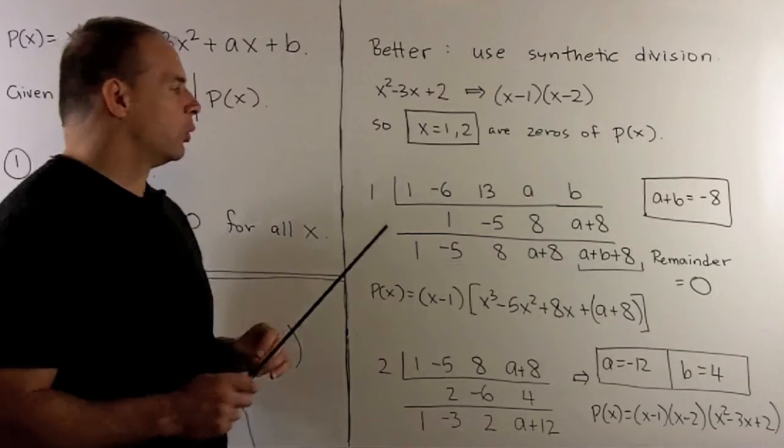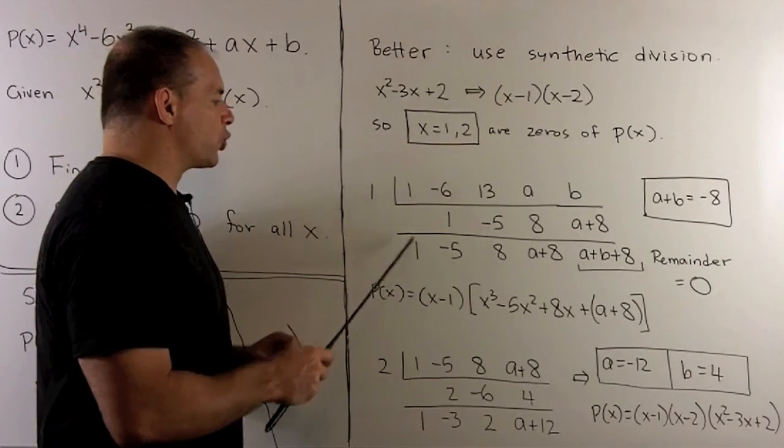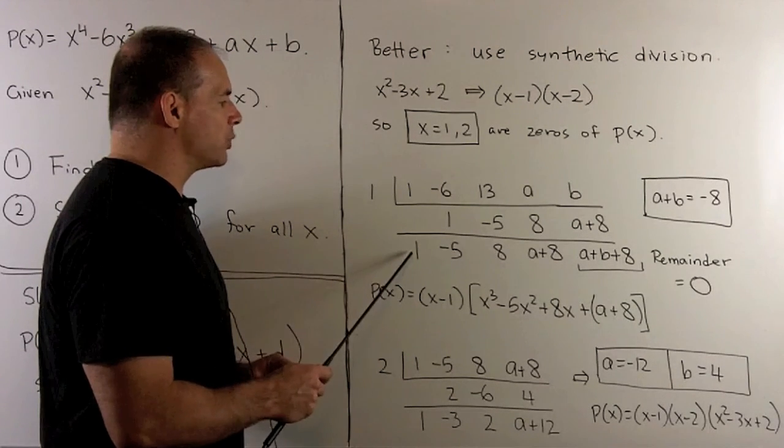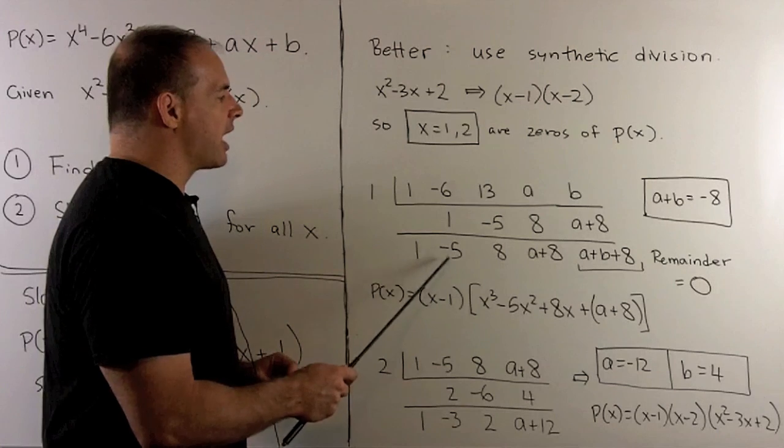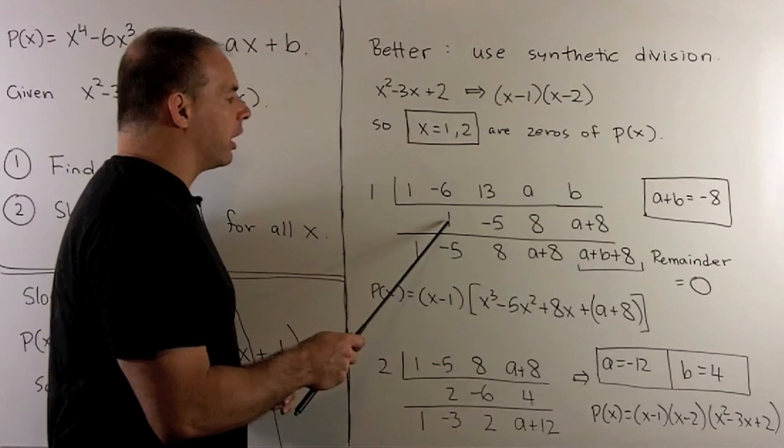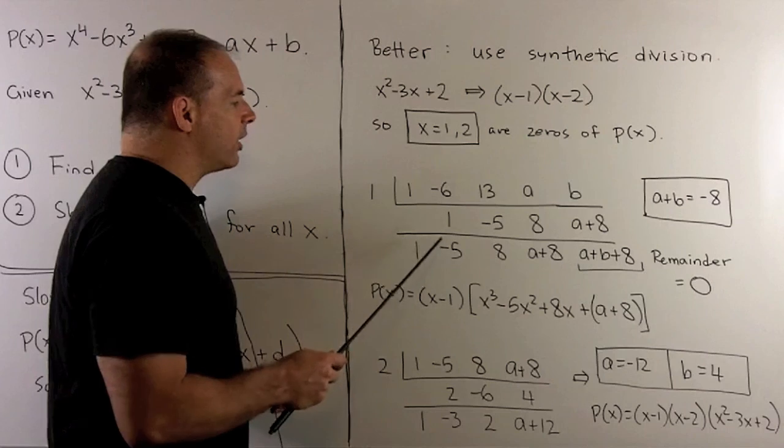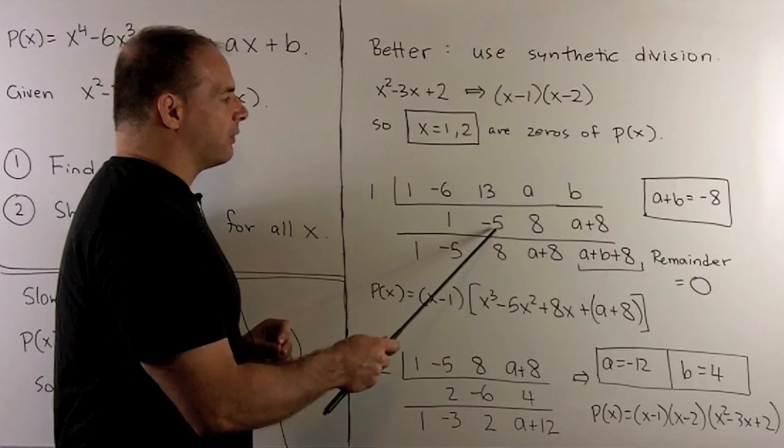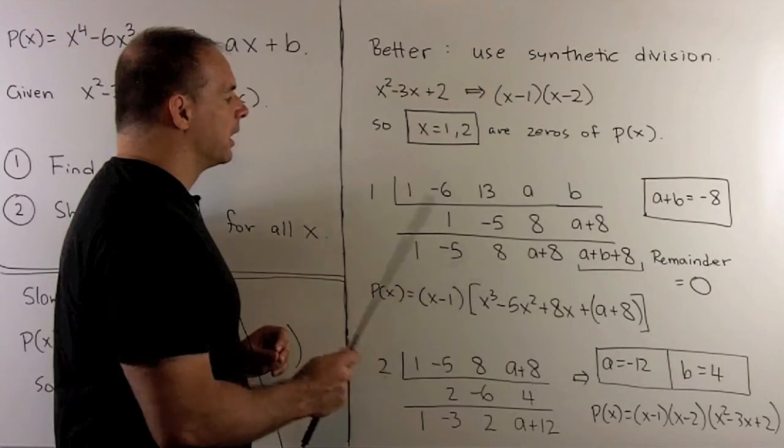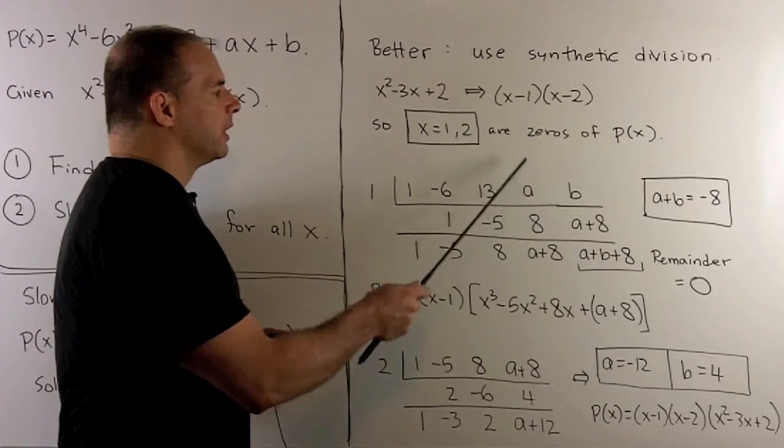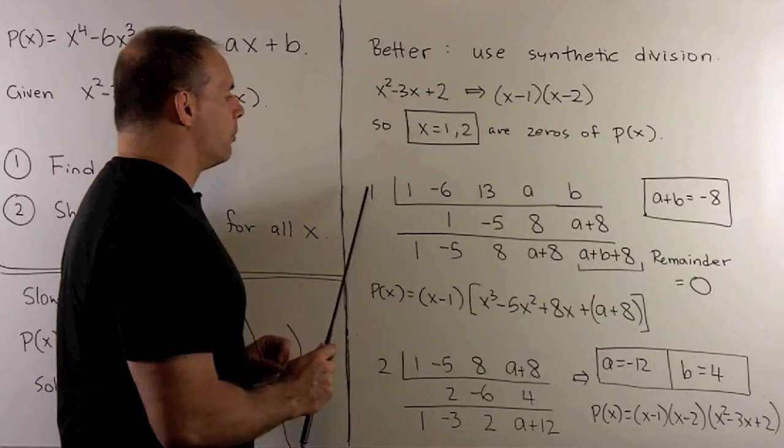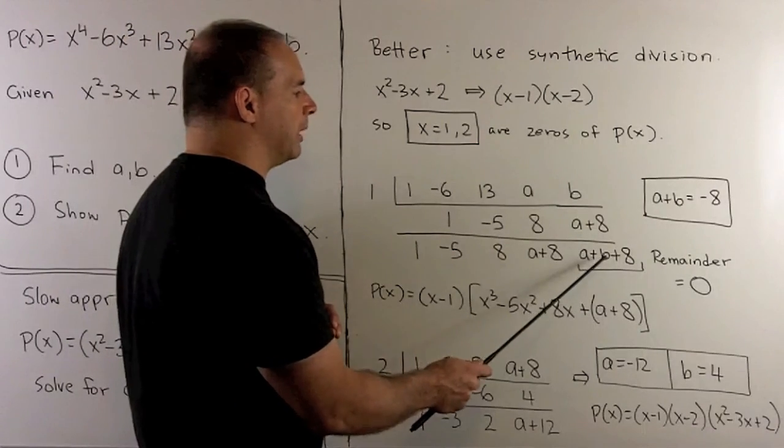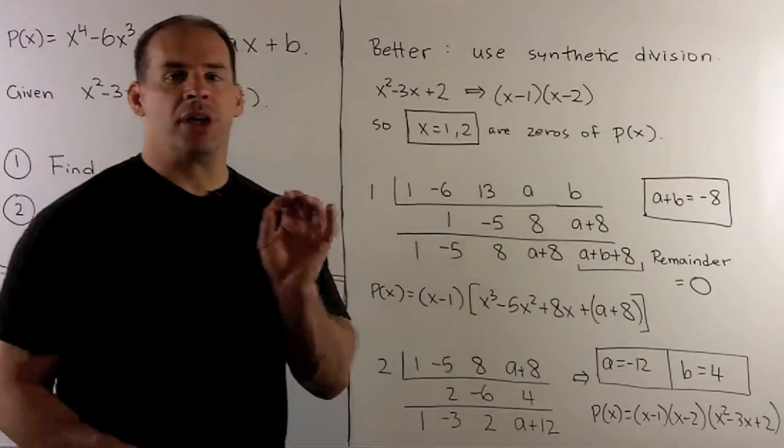Now, our rule is, we start in the top row at the 1. I drop it down. We're going to multiply our C by that 1. So it's going to be 1 times 1. I move it to the second column, middle row. So I have a 1 here. I add down. I get a minus 5. Same procedure. I multiply by the 1. Minus 5 goes there. We add. I get an 8. 1 times 8 gives me 8. We add. I get a plus 8. Multiply by 1 gives me a plus 8. Then we add. And I get a plus B plus 8. And we're done with our synthetic division.